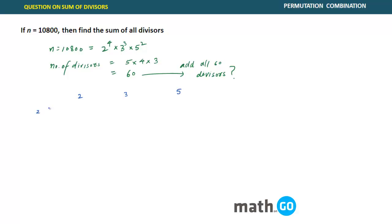So 2 has the minimum power 0. That means 2 can be selected 0 times, 1 time, 2 times, 3 times, 4 times. That is the maximum thing you can do with 2.